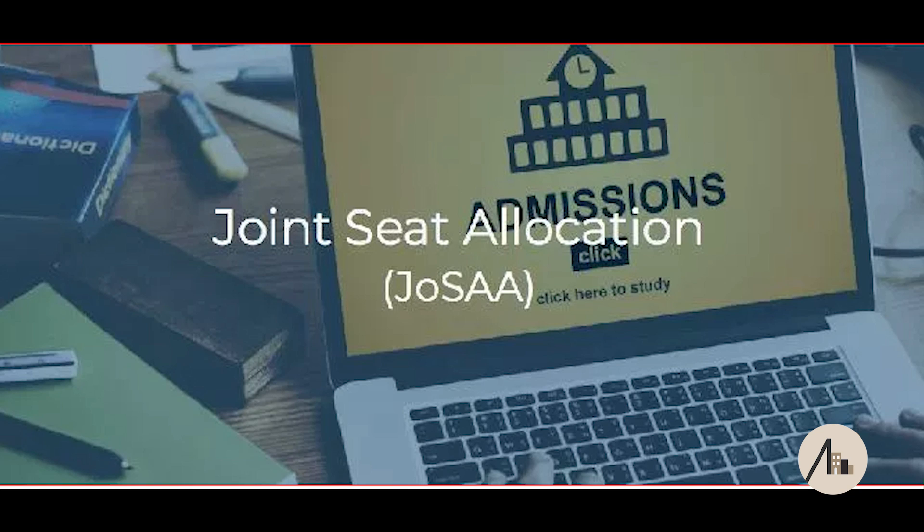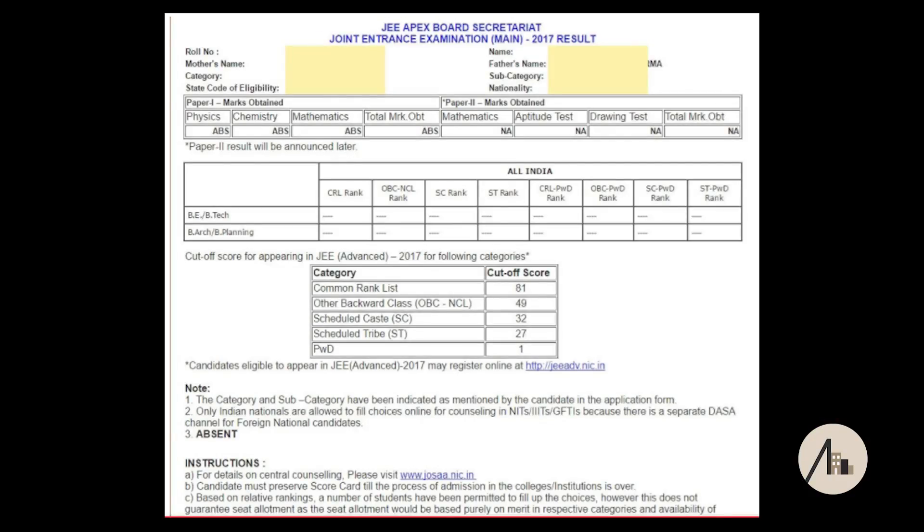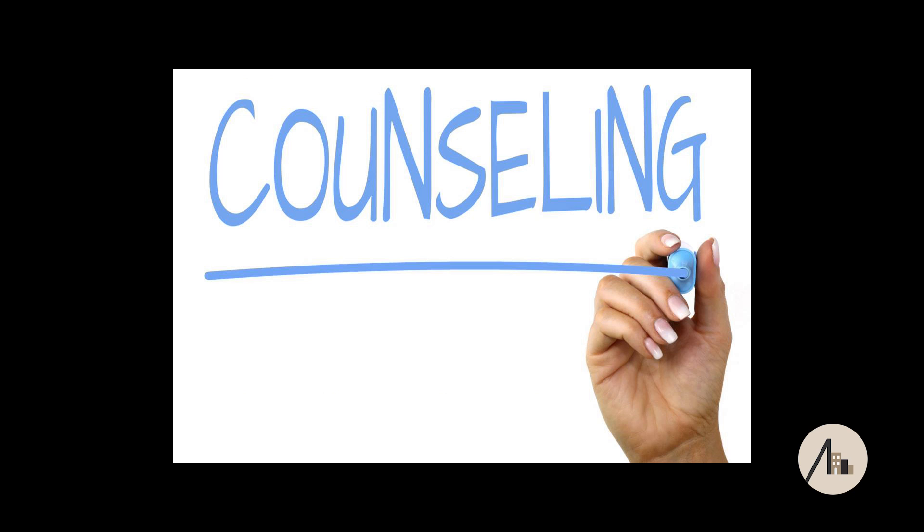The first counselling you have to focus on is JOSA. JOSA is the counselling authority — its full form is Joint Seat Allocation Authority. The second counselling is CSAB, which stands for Central Seat Allocation Body. You might not need CSAB if you are satisfied with your college, but if you are not, CSAB is for you. After getting your rank, you have to go for counselling and register on the JOSA website.